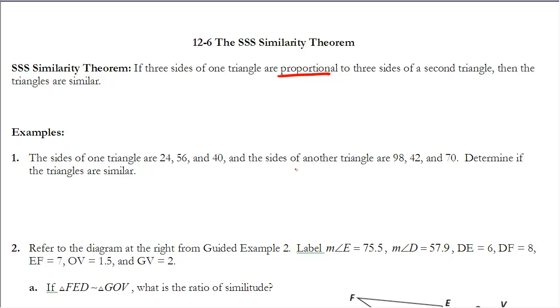What I'm going to do is I'm going to set up the ratios where I'm going to compare the shortest sides, the middle length sides, and the longest sides, and see if those ratios are equal. The smallest one here is 24, and the smallest one over here is 42, so I'm going to compare those two.